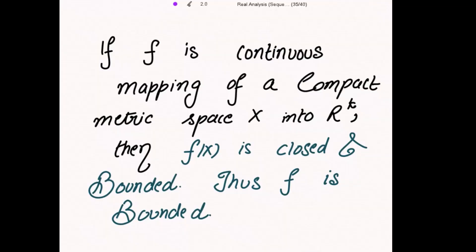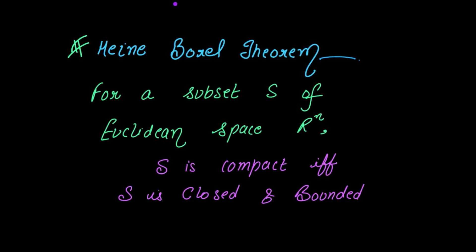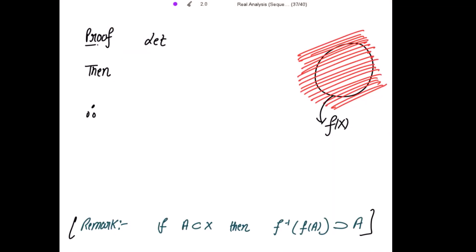To prove that f(X) is closed and bounded, it is enough to show that f(X) is compact in R^k. By Heine-Borel, compact implies closed and bounded, and vice versa, provided S is a subset of Euclidean space R^k. So we need to show that f(X) has a finite subcover.